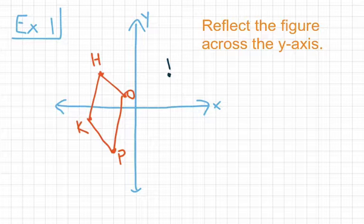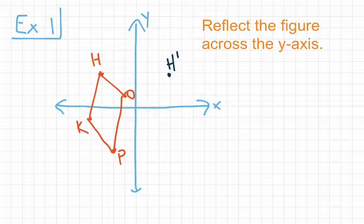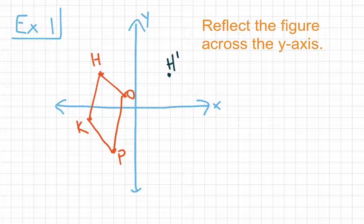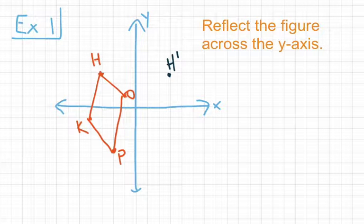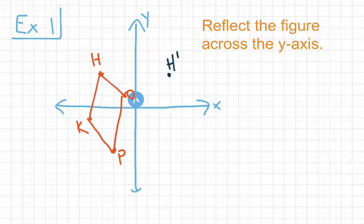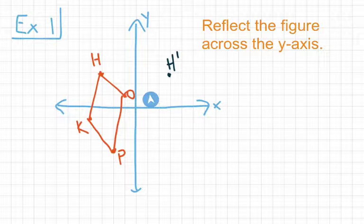The distance from H to the y-axis is 3, and staying on the same horizontal grid line, the distance from the y-axis to H' is also 3 units. That's how we get H'. Now let's find O'. O is just 1 unit away from the y-axis, so O' is also going to be 1 unit away on the other side of the y-axis.